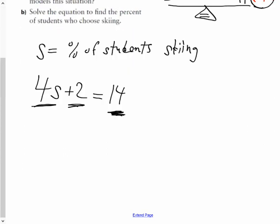Once we've created that, which is the most complicated part of the entire thing, I'm going to subtract 2 from both sides. I'm going to get 4S equals 12, and then I'm going to divide both sides by 4.